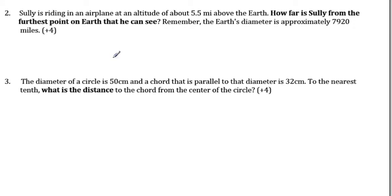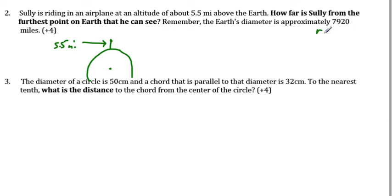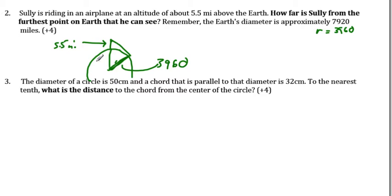Number two: we have Sully riding an airplane. The Pythagorean theorem comes up again. We have the center of a circle; Sully's up here, 5.5 miles above the earth. The earth's diameter is approximately 7920, so the radius is about 3960. We draw in a radius, and Sully looks to the corner of the earth — this distance is 3960. That same distance appears again because both are radii, so both are 3960.